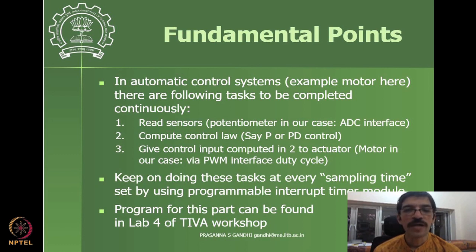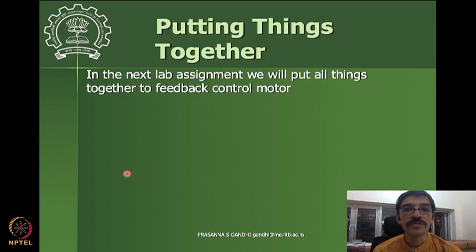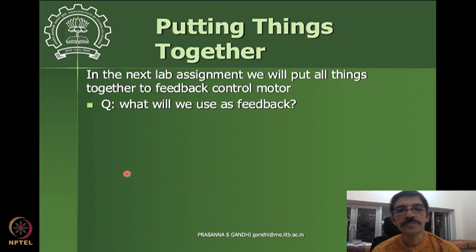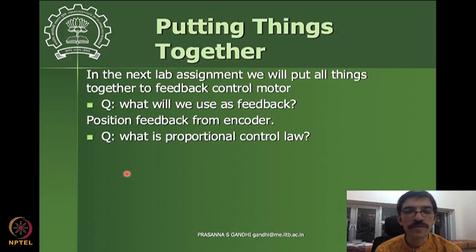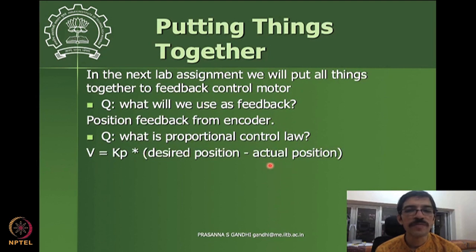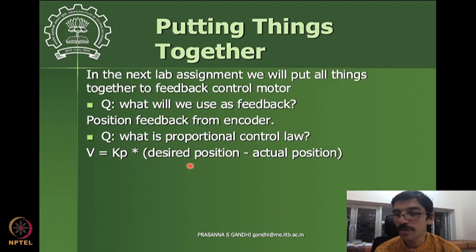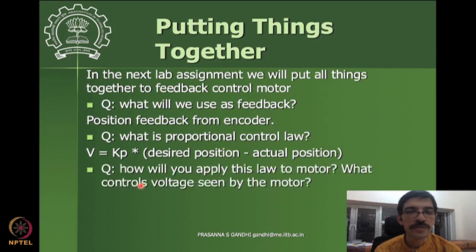We want every fixed, known sampling time for operations to happen periodically, and that job is done by the interrupt timer. To put it all together: we use encoder position feedback from the encoder. This is the reading-sensor part. Then we use some kind of proportional or proportional-derivative control law. The control expression will have a desired position and actual position. We will later see what form the desired position should take so that we can observe how our control is performing, and then how we apply this control law to the motor.